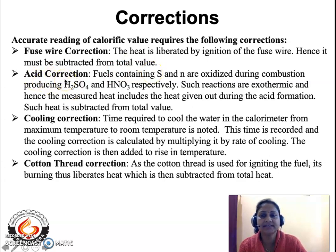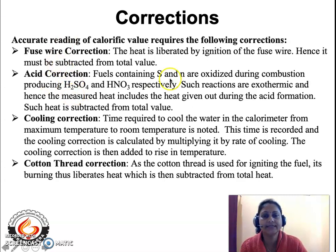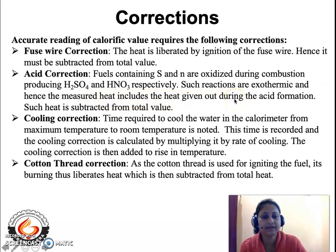The second correction is the acid correction. Fuels contain carbon and hydrogen (hydrocarbons), but some fuels also contain sulfur and nitrogen. During combustion, sulfur burns to produce sulfuric acid and nitrogen burns to produce nitric acid. These reactions are exothermic, liberating heat that gets included in the measured fuel heat. This additional heat is called the acid correction and must be subtracted from the total value.